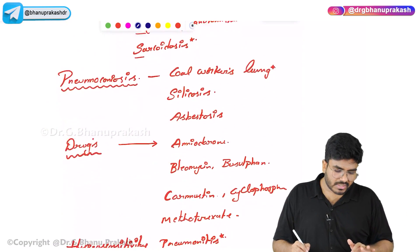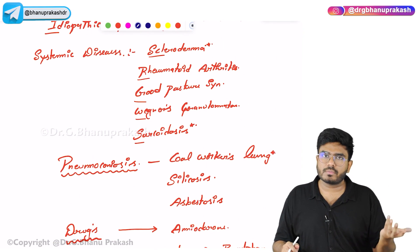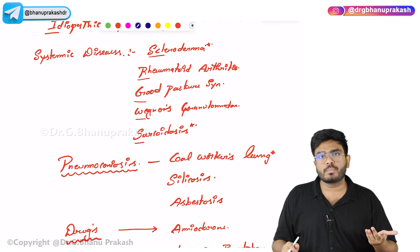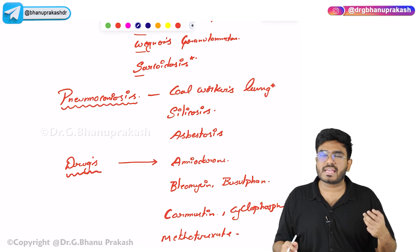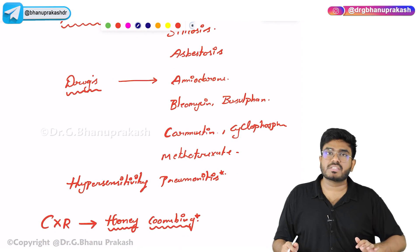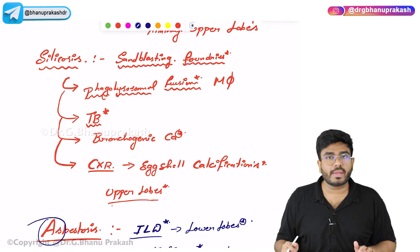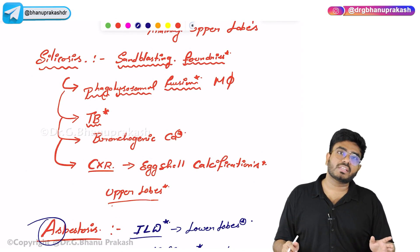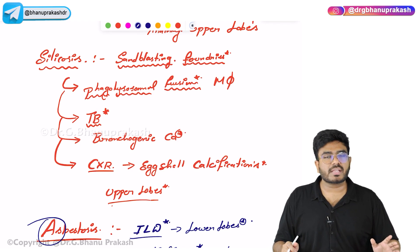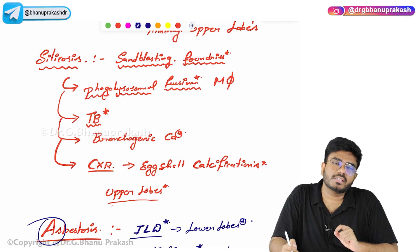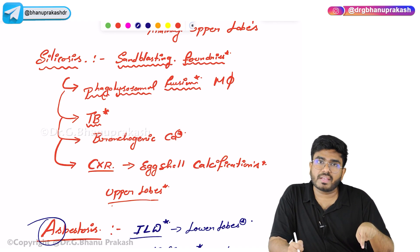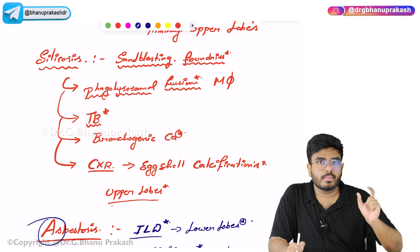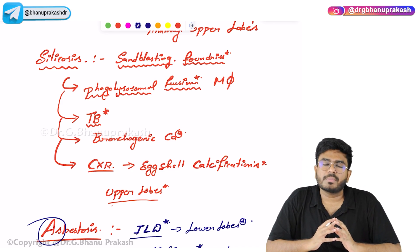Causes of restrictive lung diseases: the most common cause is idiopathic pulmonary fibrosis. Systemic disorders like scleroderma, rheumatoid arthritis, Wegener's granulomatosis, sarcoidosis, and Goodpasture syndrome can lead to restrictive lung diseases. Pneumoconiosis — coal worker's pneumoconiosis, silicosis, asbestosis — and drugs and hypersensitivity pneumonitis can also lead to restrictive lung diseases. Which increases risk of mycobacterial TB? Silicosis. Which shows defect in phagolysosomal fusion? Silicosis. Which shows ferruginous/asbestos bodies? Asbestosis. Which affects upper lobes? Silicosis and coal worker's pneumoconiosis. Lower lobes? Asbestosis. Cancer of the pleura — mesothelioma — is associated with asbestosis. With this, the topic of restrictive lung disease is completed.